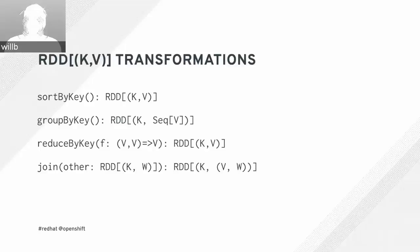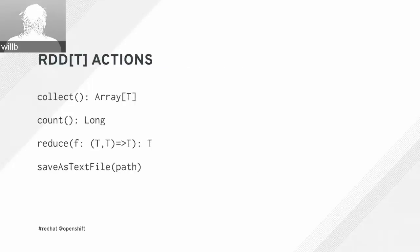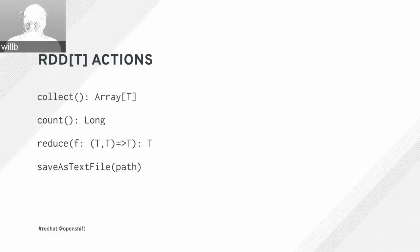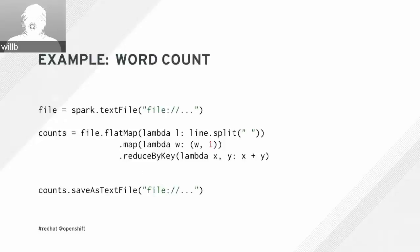These transformations all operate lazily, so we haven't done anything yet. We need to actually perform an action that returns a value to the main program for anything to happen. Example actions include collect — turning RDD elements into a local collection — count to get a count of values, reduce to combine all elements with a commutative and associative binary operation, and saveAsTextFile to save results either locally or as a partitioned file on a distributed filesystem.